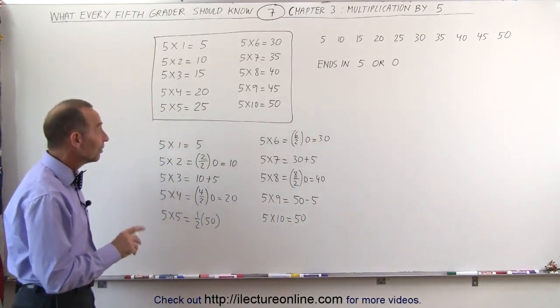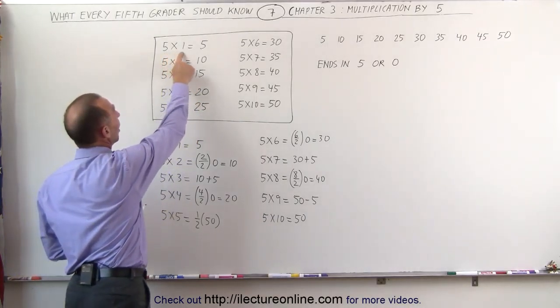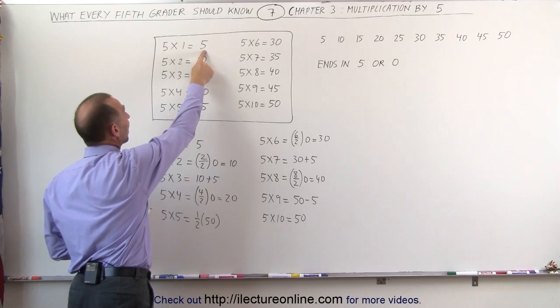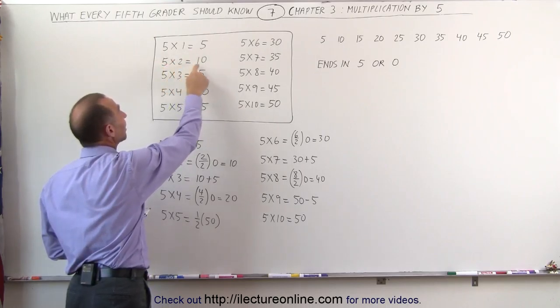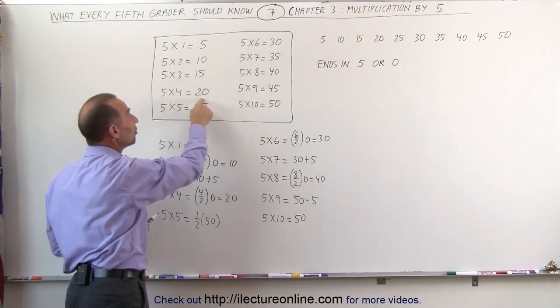Another way of looking at this is to look at the multiplication and notice that whenever we multiply times an odd number, it ends in a 5, and when we multiply times an even number, it ends in a 0. Times an odd number, ends in a 5, times an even number, ends in a 0.